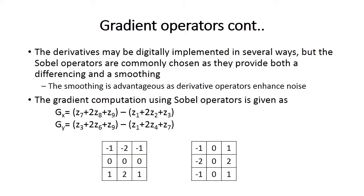Gradient operators can also be implemented digitally in several ways, but the Sobel operators are commonly chosen as they provide both differencing and smoothing. The smoothing is advantageous because derivative operators enhance noise. The gradient computations using Sobel operators are given by Gx and Gy matrices. The values z1 through z9 are differentiated from each other using the following Sobel matrices.